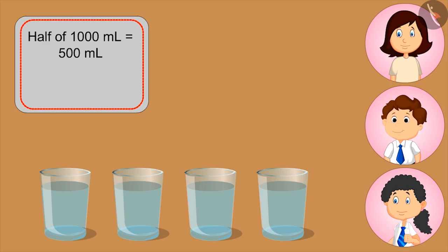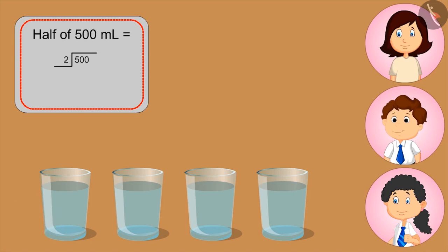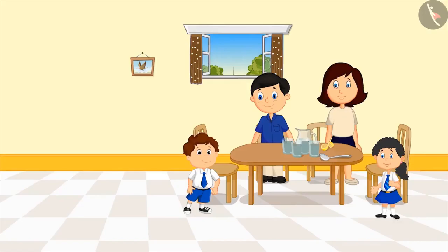Yes, Mom. Can you tell how much lemonade is in one glass? Half of five hundred ml. Very good. So, what's that? Kids, you can pause the video and think about the answer. We have to divide five hundred by two. Two fifty? Very good, Bholu. We all got two hundred and fifty ml of lemonade.